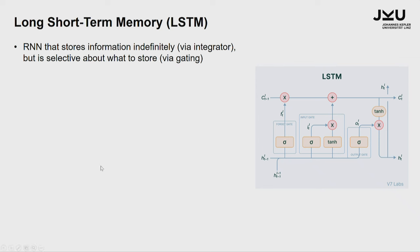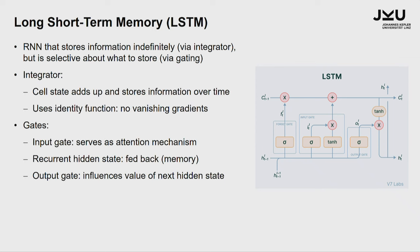One particular variation of the recurrent neural network is the so-called long short-term memory, LSTM, which was invented at the beginning of the 90s. It is a very powerful architecture because it can store information indefinitely via an integrator, but it can be selective about what to store via gating. The integrator is just a cell state being added up to its own past, storing information over time by just adding up, and there are no vanishing gradients.